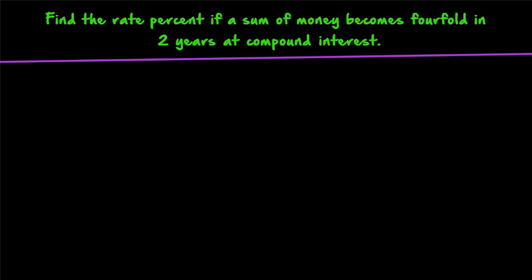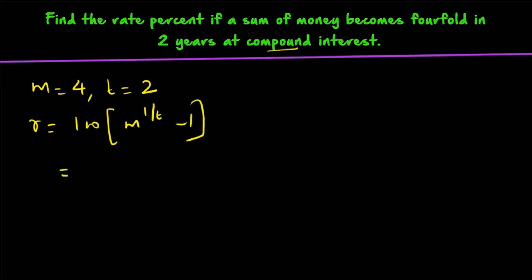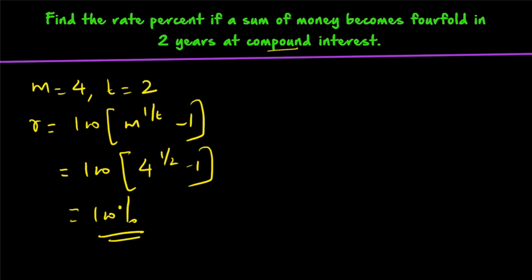Final question: Find the rate percent if a sum of money becomes 4-fold in 2 years at compound interest. Whenever the question asks for rate percentage, remember this formula. Here M = 4 (4-fold) and T = 2. Applying the formula: R = 100 × (4^(1/2) − 1). Now 4^(1/2) means the square root of 4, which equals 2. So R = 100 × (2 − 1) = 100%. Thank you for watching.